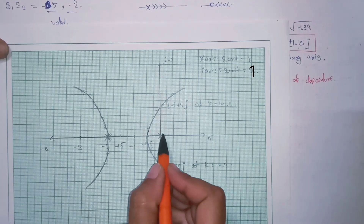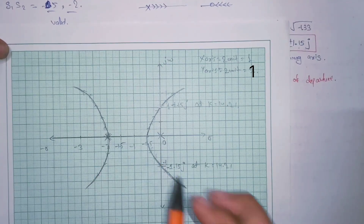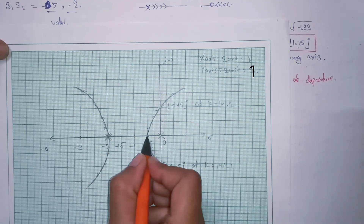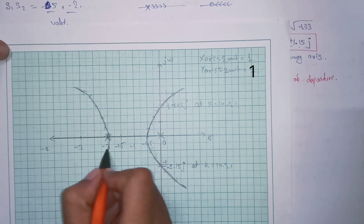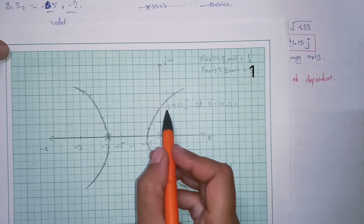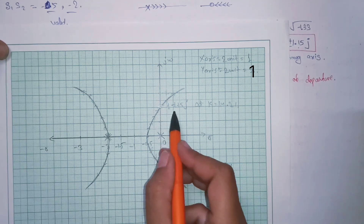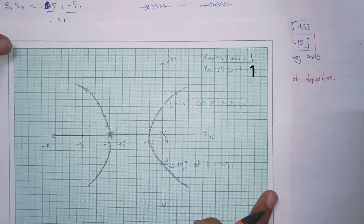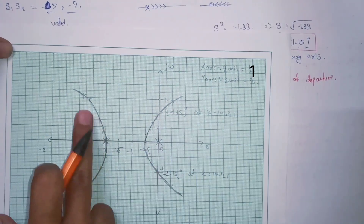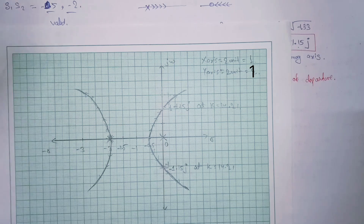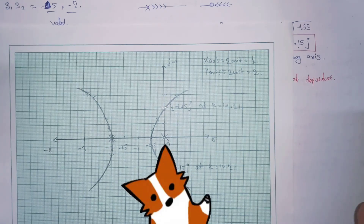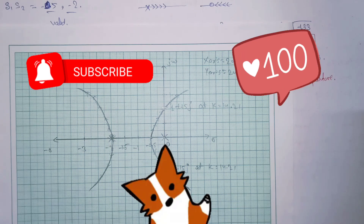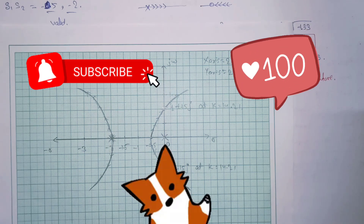To summarize: zero is at zero (no zeros), poles are at zero and minus two (triple). Root locus exists between zero and minus two. Breakaway points are at minus 0.5 and minus 2. The imaginary axis intersection points are at ±1.15j. There are four branches in total. If you understood this concept, don't forget to like and subscribe for more such videos. Thanks for watching.